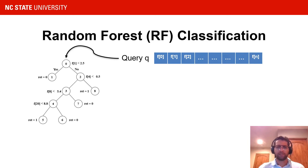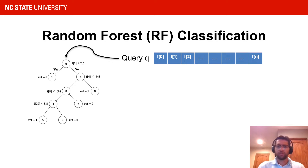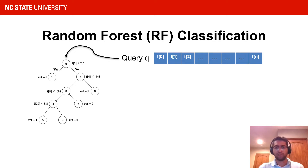During the RF classification phase, a single decision tree takes a query or sample as input and returns a decision stored in a leaf node. Since we focus on classification, decision trees return a classification decision for a query. In this illustration, a query Q is characterized by an array of values that we call the feature array. The dimensionality of the query corresponds to how many features there are, in this case N. Each element of the array can be accessed in various stages of decision tree traversal and is compared against the threshold value stored in nodes to determine the path to traverse.